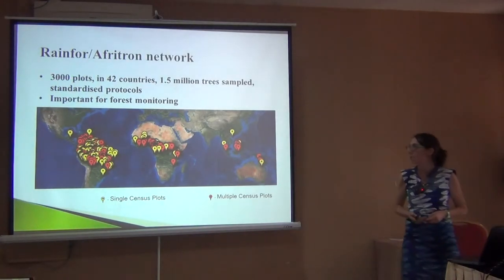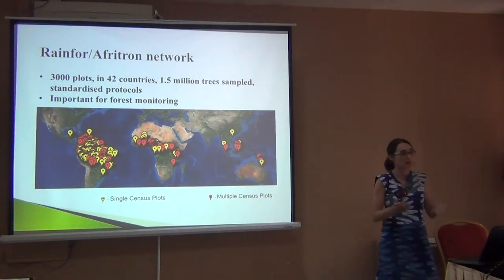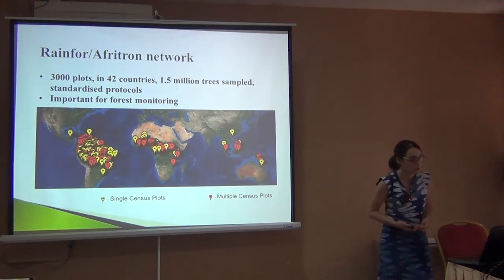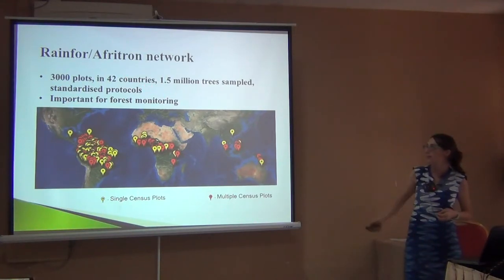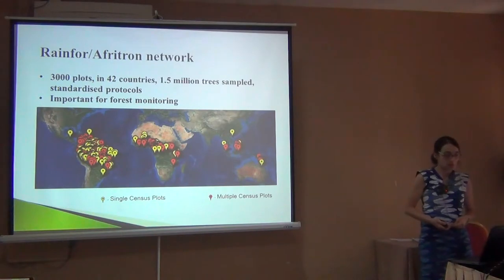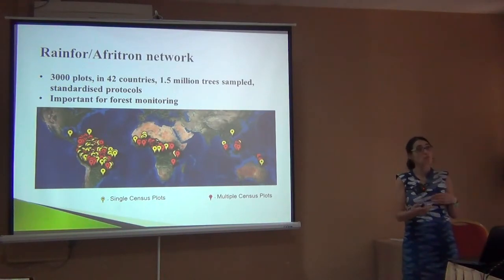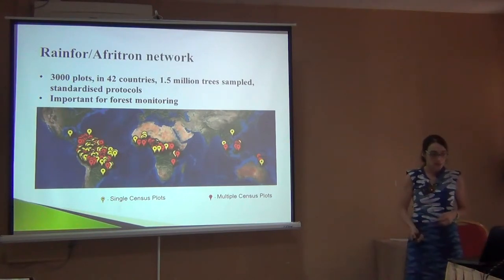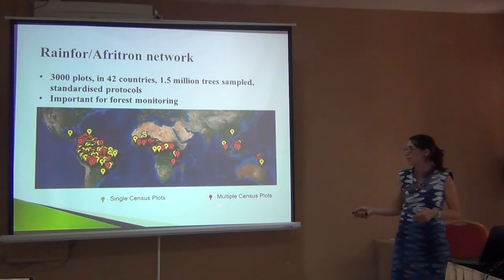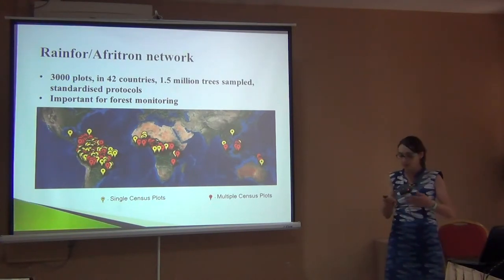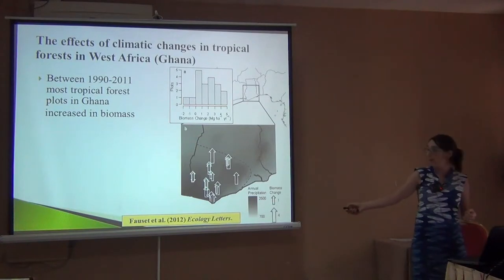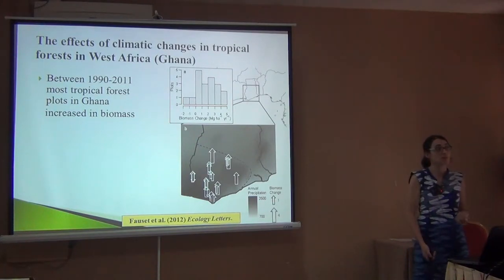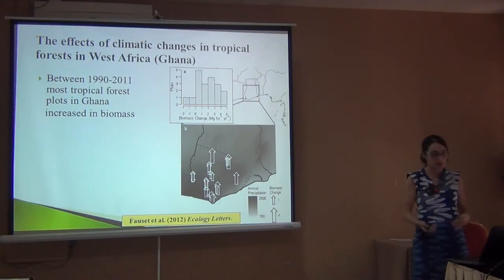The Rainfor and Afritron network is a network of plots — most are one hectare, some are smaller — across tropical forests: 3,000 plots in 42 countries, 1.5 million trees. I just came from Congo, where we added more trees and plots to this database. They're very important for forest monitoring to see how forests react to climatic changes. Some plots have been measured since the 1950s, from colonial times, helping us see how things change over time.